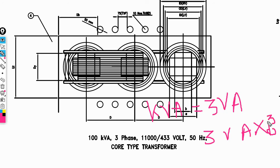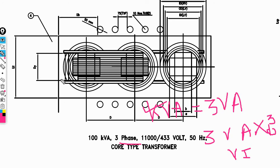That is, V means volts and A means amperes — V and I. The kVA rating is very important; we need it for three-phase supply.